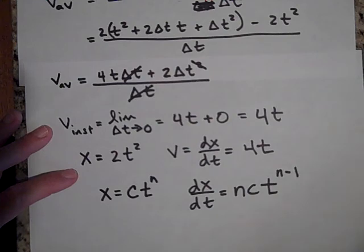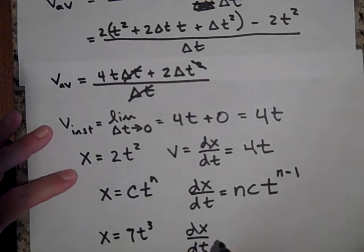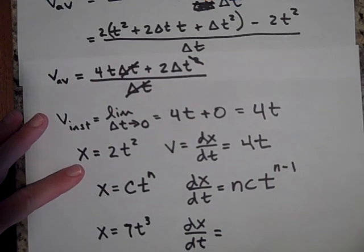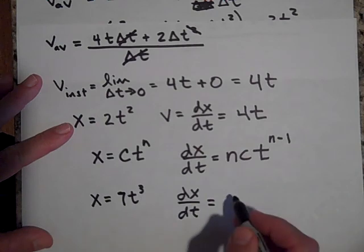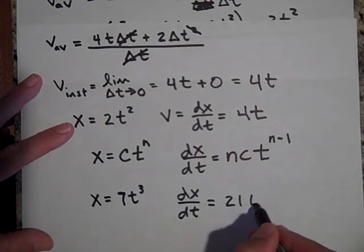Now, if you understood that, then you would understand that x, if that's 7t cubed, that the derivative of x with respect to time is, you know what I'm going to tell you it is? It's 21 times t squared.